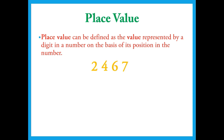Here is an example for you. Here you can see a four digit number written: 2467. Each digit has a particular place value. Seven has the place value ones, six has the place value tens, four has the place value hundreds, and two has the place value thousands. So each digit in this given number has some place value.